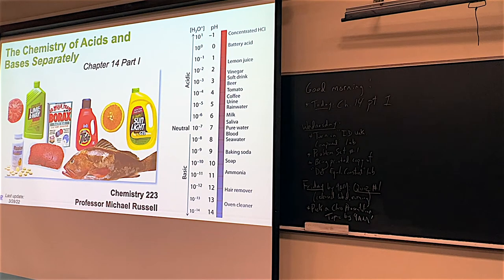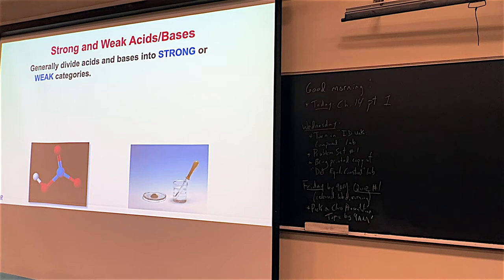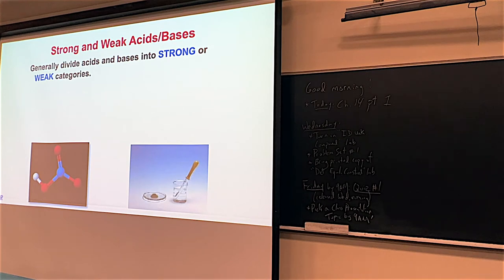If you don't remember anything about acids and bases before, that's okay, because we're going to go through all of it now. The first thing you need to know is that there are strong acids and bases, and there are weak acids and bases. There's only a couple of common strong acids and strong bases, but there are literally thousands upon thousands of weak acids and weak bases.